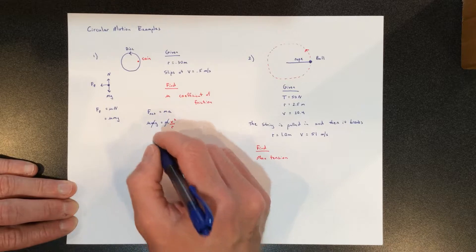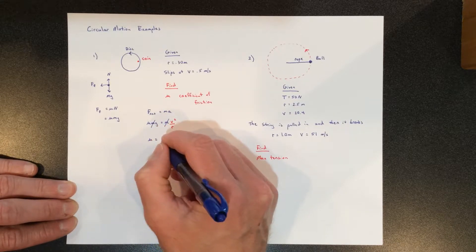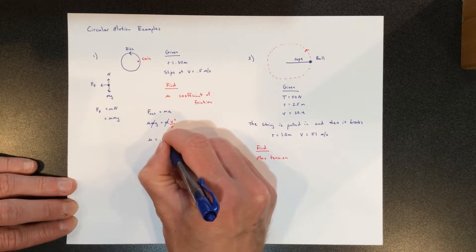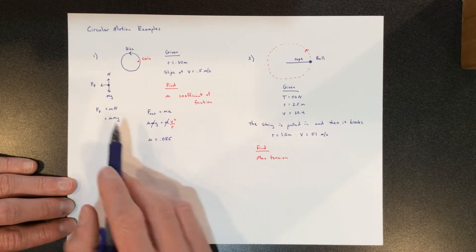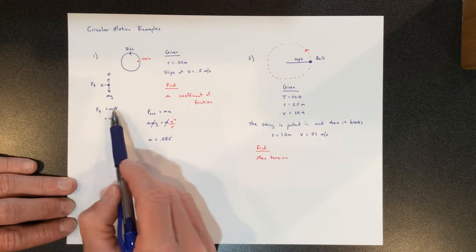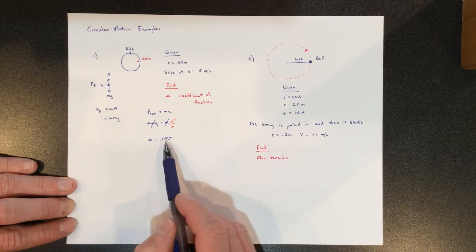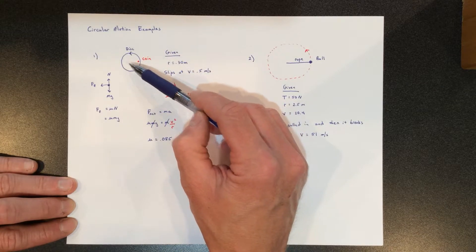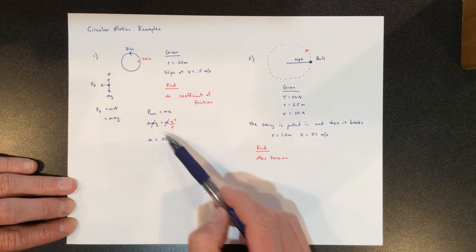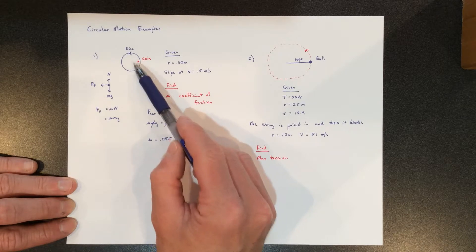When you solve for this, you get a mu, which is the coefficient of friction, of 0.085, and there are no units. Remember, mu is the ratio of these two forces, so it doesn't have any units. If you put a different coin on the same disc, it's going to have a different coefficient—this thing is going to be dependent on these two surfaces.